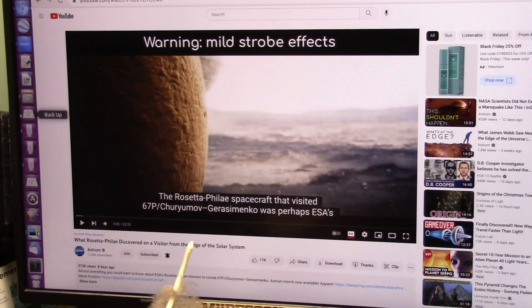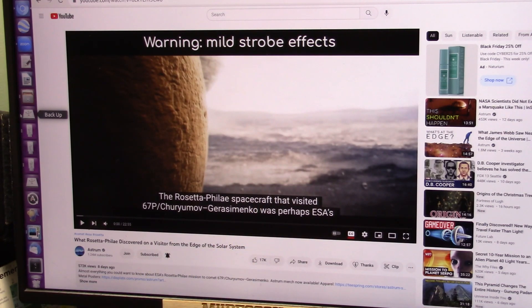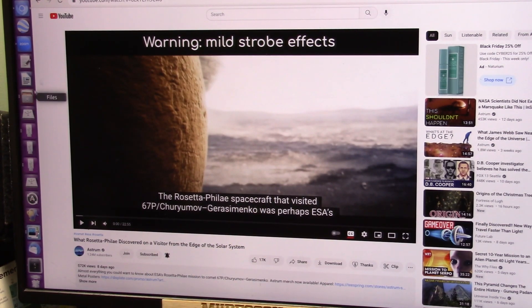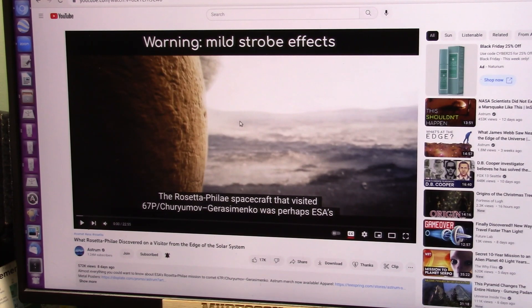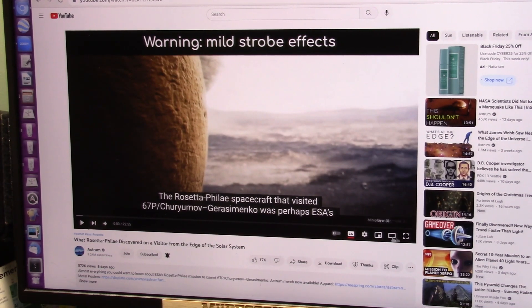This is Comet 67P Churyumov-Gerasimenko, and the European Space Agency went up there and landed a lander on it. I followed this thing very, very closely.